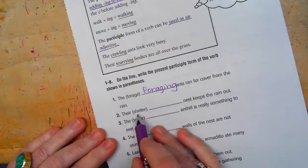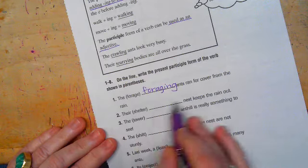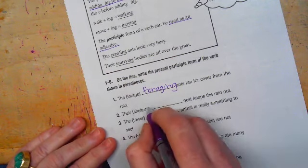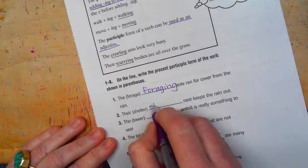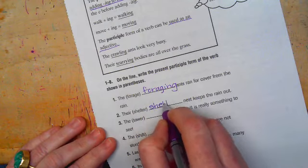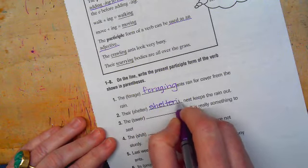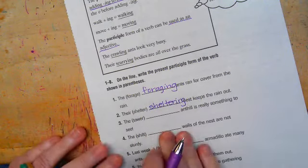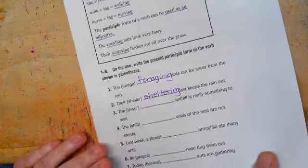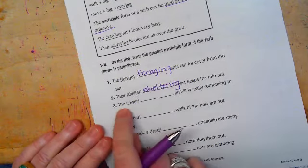Number two, their shelter nest keeps the rain out. We're going to add ING to shelter, and it becomes sheltering.